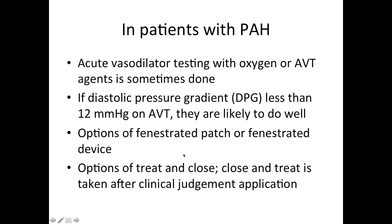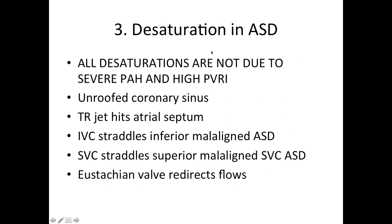Here come the possibilities of treat-and-close or close-and-treat — these are taken after clinical judgement. In general, desaturation in an ASD is considered an ominous sign because it may indicate severe pulmonary hypertension and high pulmonary vascular resistance. But desaturation in ASD can also be due to unroofing of the coronary sinus, tricuspid regurgitation jet hitting the atrial septum causing right-to-left flow, IVC straddling in inferior maligned ASD, or SVC straddling in SVC-type ASD — all can be causes of some degree of desaturation in ASD.